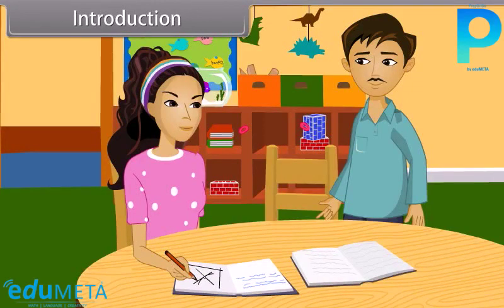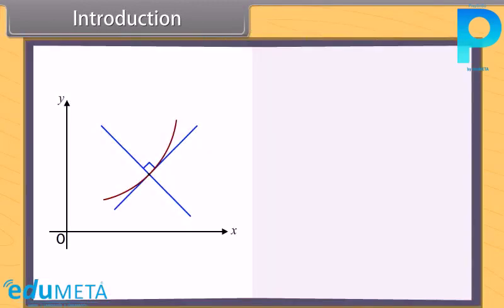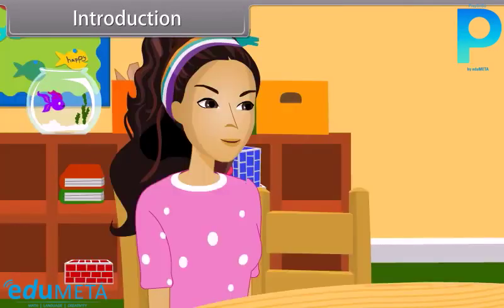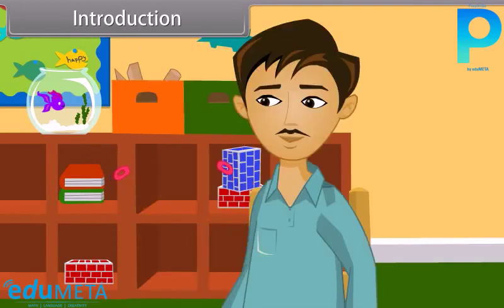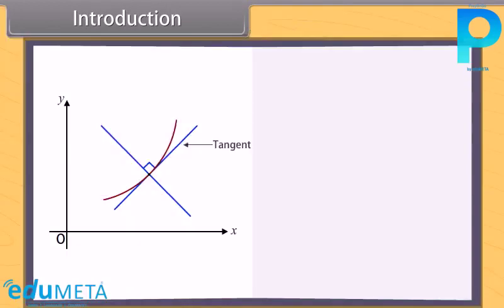Dad asks her to show him. He then asks: What according to you is a tangent? Sheetal points again saying: This is tangent. Am I right, Dad? Dad responds: No, you are not. This is tangent and this is normal. The tangent is a straight line which just touches the curve at a given point. The normal is a straight line which is perpendicular to the tangent.